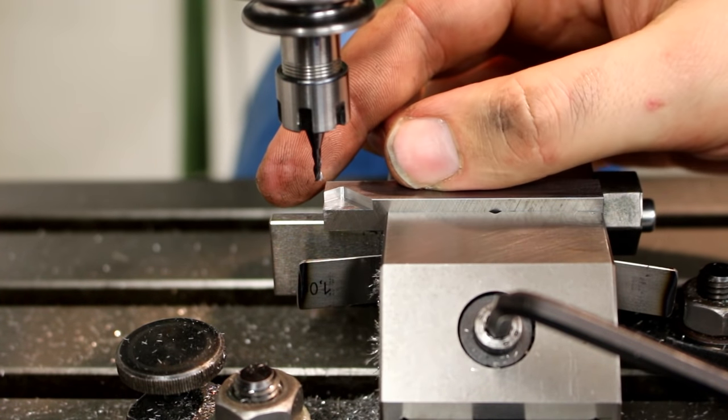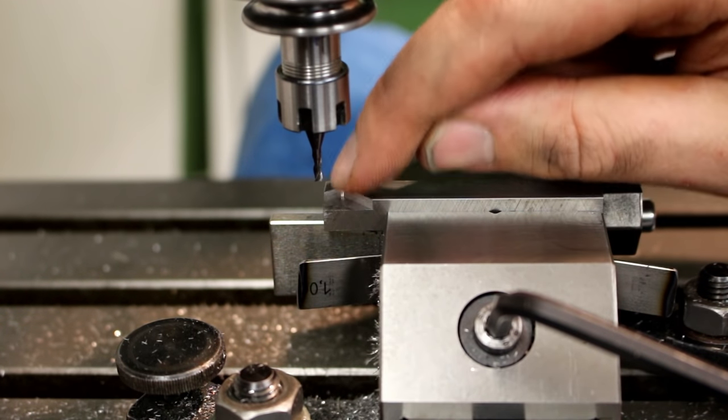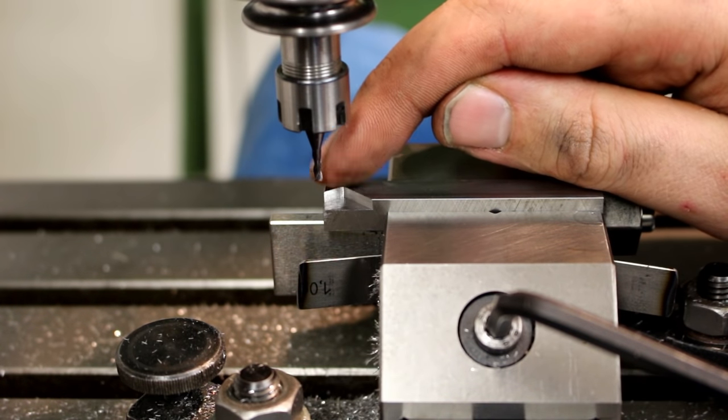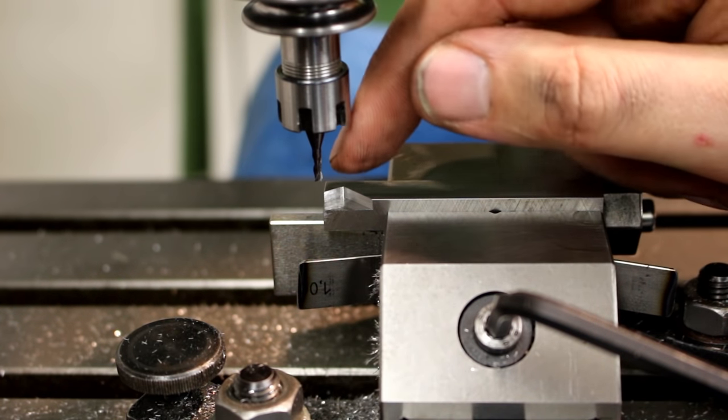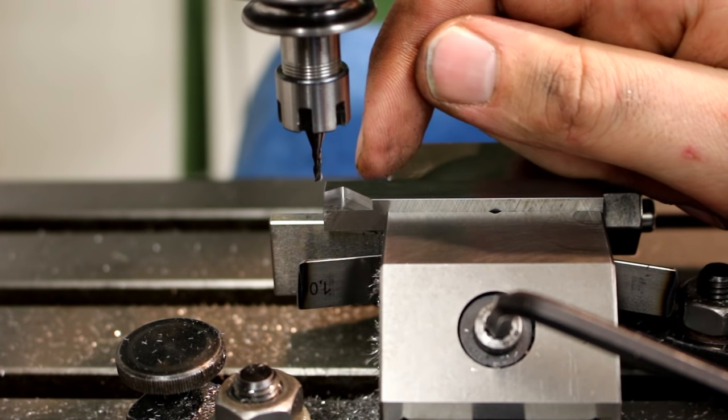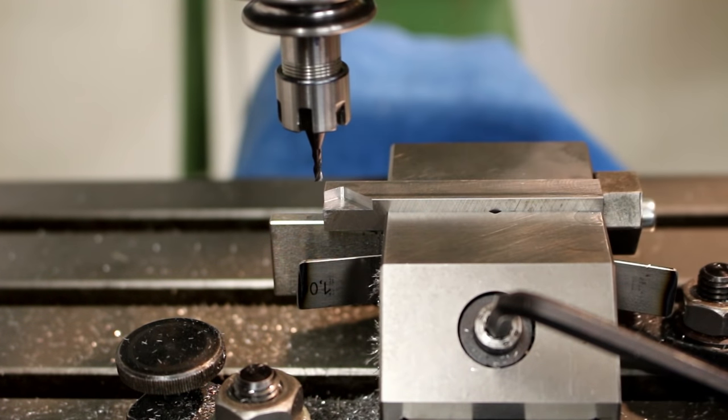And I'm cutting the insert pocket in two steps. 0.25 millimeters deep each time to a total depth 2.5 millimeters. Let's do the next one. And same here. I have a leaf spring in the vise to keep my parallel in place.